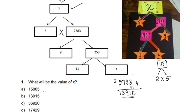Option B is correct. The answer is 1, 3, 9, 1, 5 — that is, 13,915.